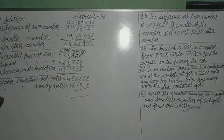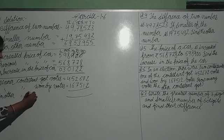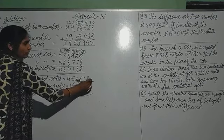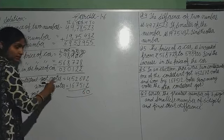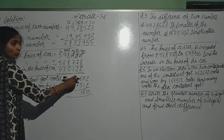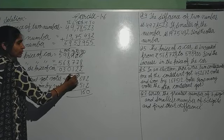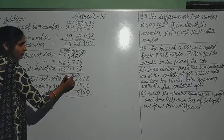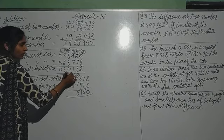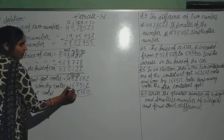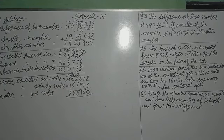Other contestant got votes — after subtraction: 2 minus 2 is 0. 7 minus 1 is 6. 6 minus 5 is 1. 7 minus 2 not possible, borrow — becomes 12 minus 7 is 5. Then borrow again — 4 becomes 3, 14 minus 6 is 8. 1 minus 3 not possible, borrow — 3 minus 1 is 2. That is the answer. Clear?